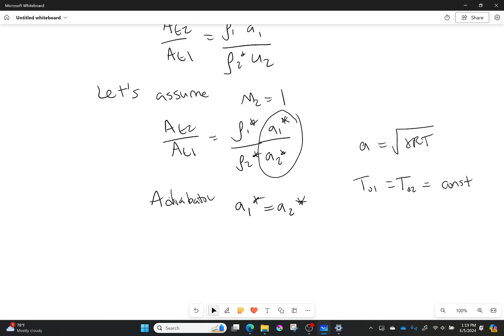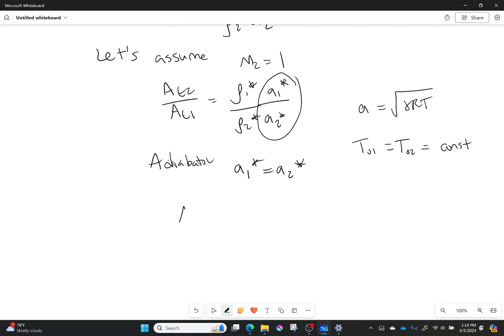And so if they're both going Mach 1, then I can actually say that A1 star is equal to A2 star because there's nothing to change the temperature. And so if I do that, I get a really nice little equation here.